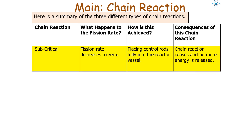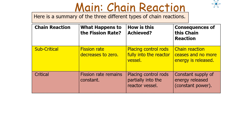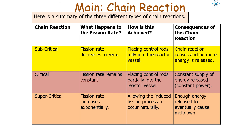To summarise the different types of chain reactions: a subcritical fission chain reaction sees the fission rate decrease to zero, achieved by fully placing control rods into the reactor vessel so the chain reaction ceases. A critical chain reaction keeps the fission rate constant by placing control rods partially into the reactor vessel, giving a constant supply of energy. A supercritical chain reaction sees the fission rate increase exponentially, allowing the induced fission process to occur naturally with no measures to halt it, eventually producing enough energy to cause nuclear meltdown.